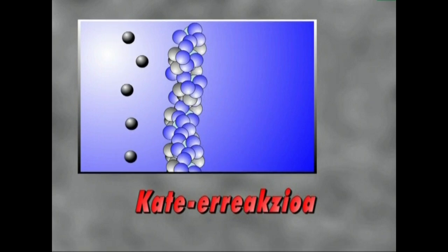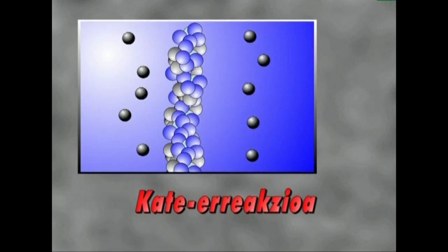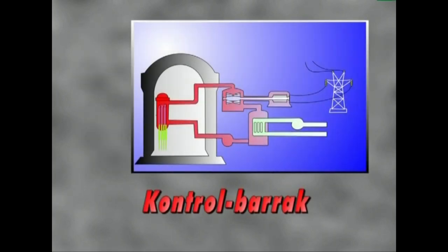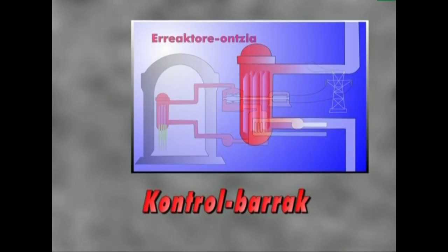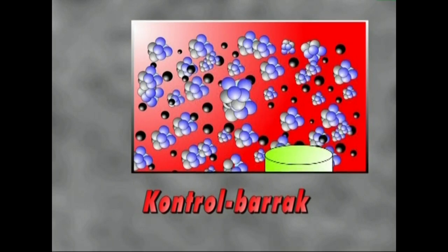Fisioa gertarazteko behar den neutroi kopurua, eta askatutakoetatik fisioa gertatzeko prest gelditzen direnen kopurua, bera bada, kate erreakzioa egon korra edo kritikoa izango da. Fisioa erreakzioaren abiadura kontrolatzeko, hau da, erreaktorearen potentzia kontrolatzeko, edo behar denean geldiarazi eta abiarazteko kontrol sistema dira, kontrol barrak.